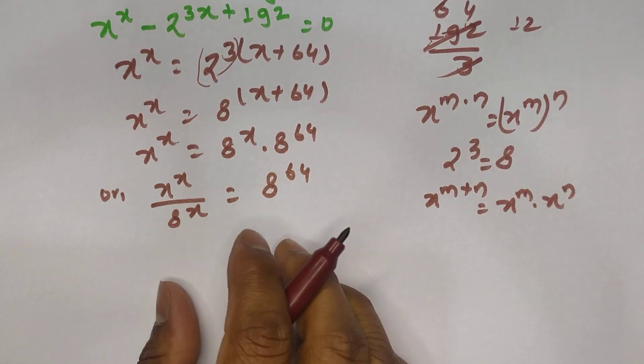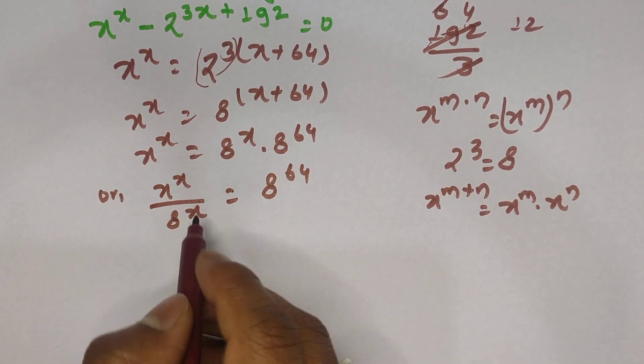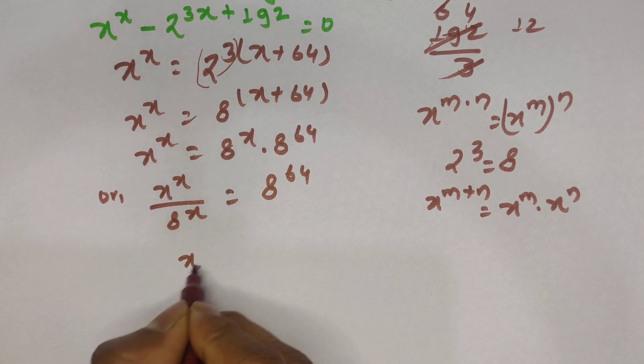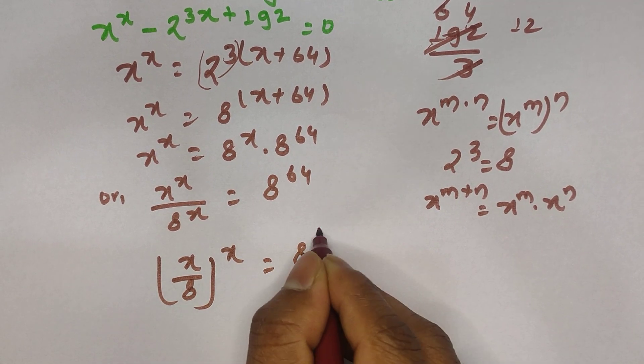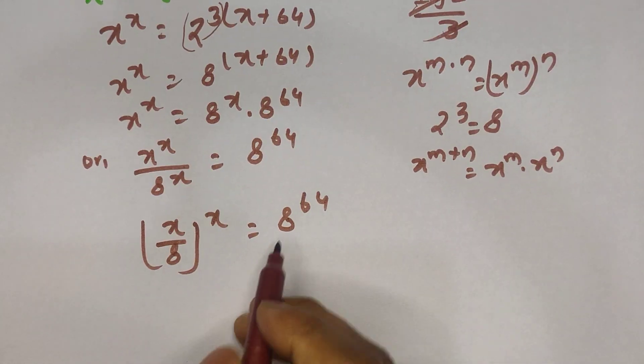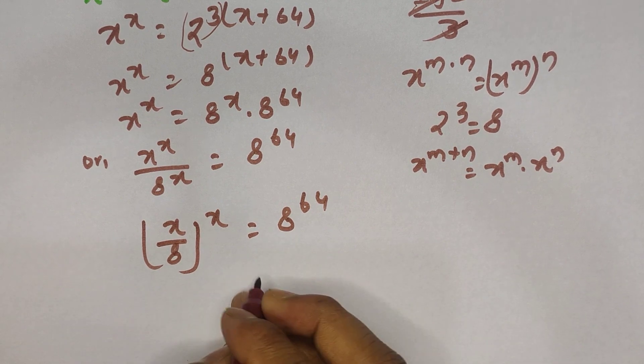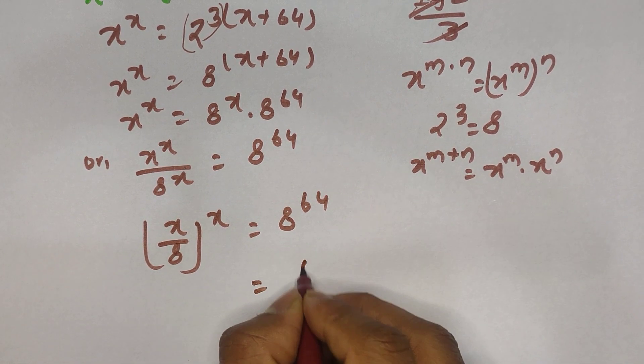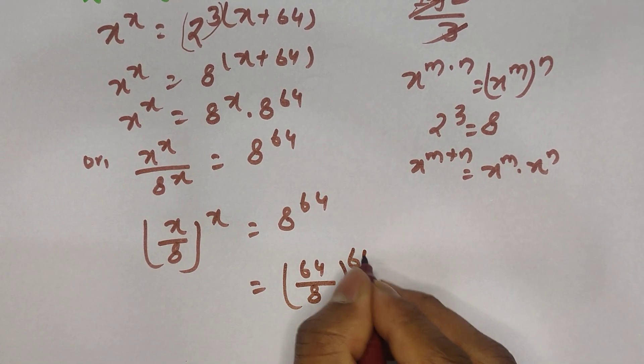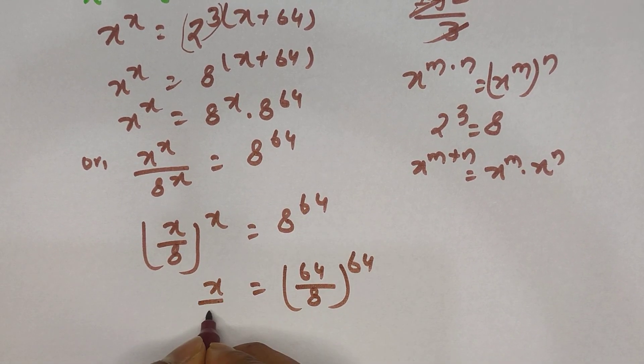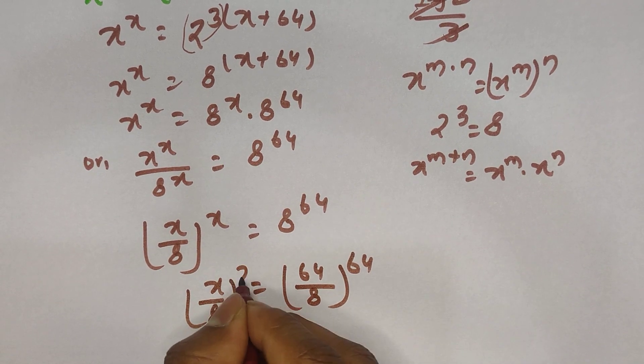Here you can see that both have the same exponent, so we can write x divided by 8 to the whole power x equals 8 power 64. And 64 can again be written as 64 divided by 8 to the whole power 64.